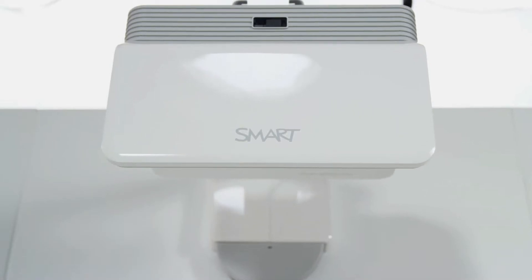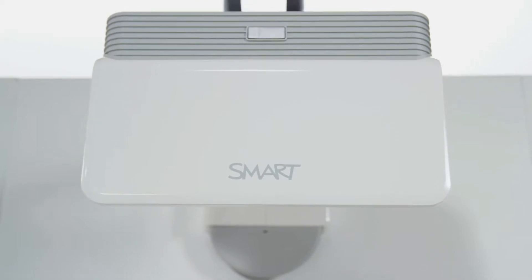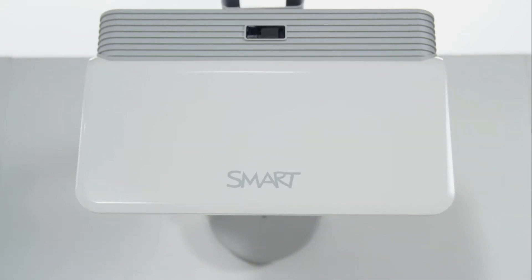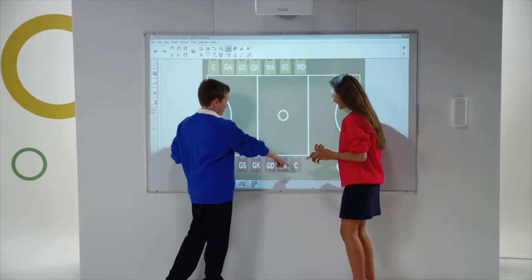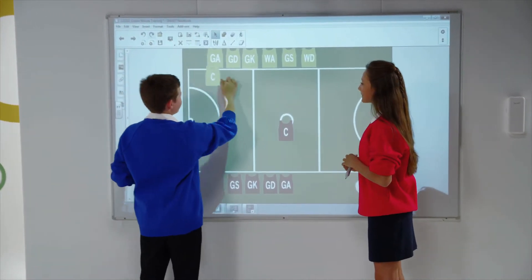The projector's exceptional ultra short throw projection cuts down on shadows and glare, and the projector offers the creation of screen sizes of up to 100 inches on the diagonal that will engage the whole class with crisp and bright HD images.